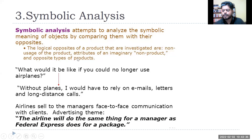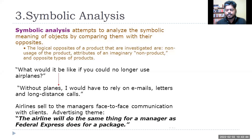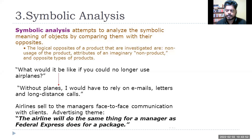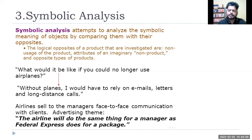Symbolic analysis attempts to analyze the symbolic meaning of objects by comparing them with their opposites — the logical opposite, a non-usage of the product, or an opposite type of product. Two-wheeler versus four-wheeler: why do you like two-wheelers and not four-wheelers? Someone might say: in a car I feel boxed in a steel box, but on a two-wheeler I feel freedom. So the meaning of that vehicle is freedom. We can also ask: if you have no vehicle of your own, what will happen? Those are the things we want to explore.